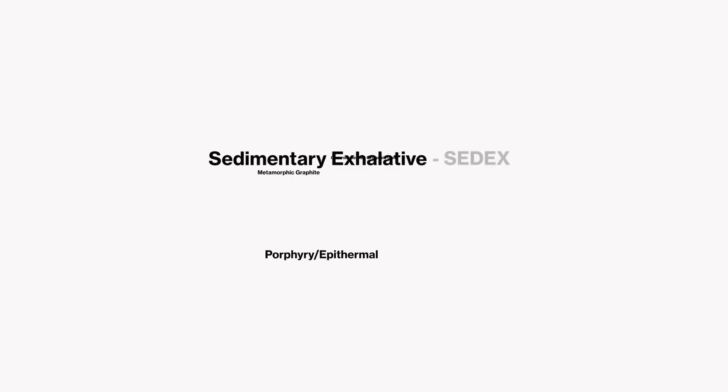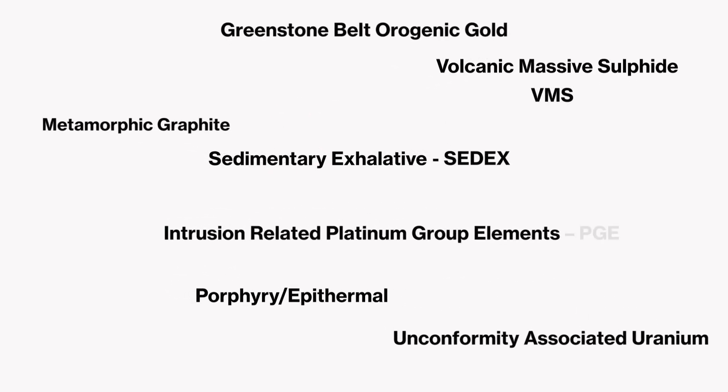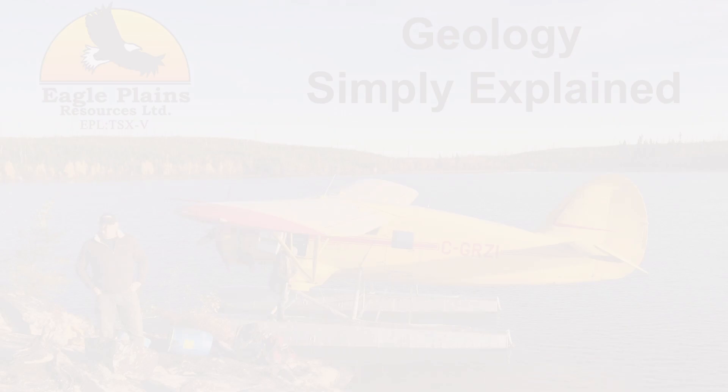We use labels to group similar types of deposit processes under one name, but because these are natural processes, this is a generality — never are two of these exactly the same, only that they are formed by a similar set of processes. Occasionally, even after a deposit has been mined, providing maximum understanding of its nature, there can be disagreement as to what type of deposit it was.